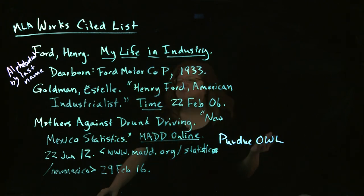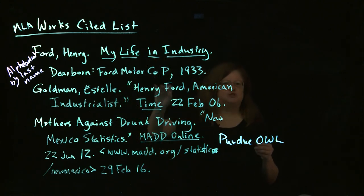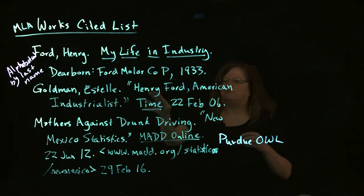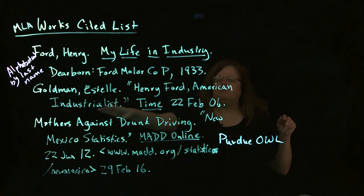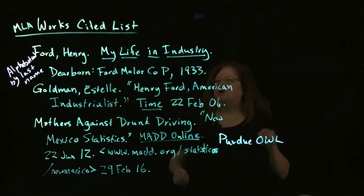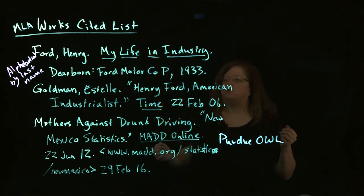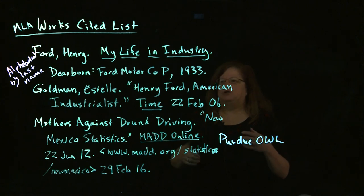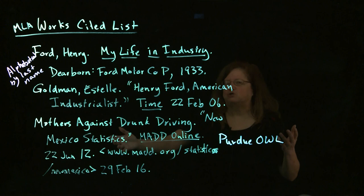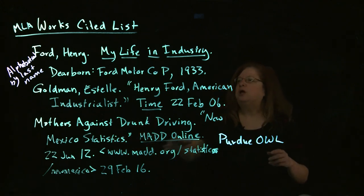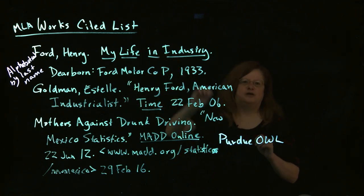One other thing to mention: when do you use italics or underlining as opposed to quote marks? You use quote marks for little things. So we use quote marks for an article, quote marks for a chapter within a book, and quote marks for a song. We use italics for big things — a book, a record album. So: quote marks are for little things, italics are for big things. That's one of the things you can remember as you're setting up your Works Cited List.